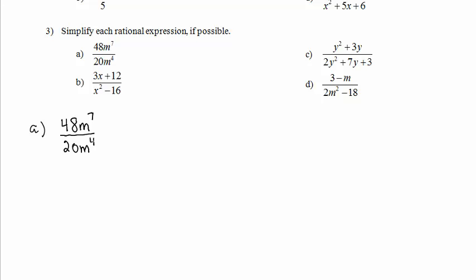In Part A, we have 48 times m to the 7th divided by 20 times m to the 4th. So we can divide down. Dividing 48 by 4, we get 12. Dividing 20 by the same 4, we get 5. The shortcut for simplifying a power of m divided by another power of m is to use the law of exponents where you subtract. And 7 minus 4 is 3.